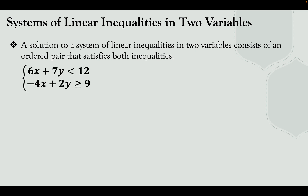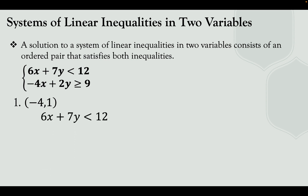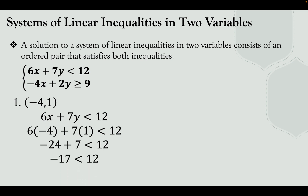Consider the system: 6x plus 7y less than 12, and negative 4x plus 2y greater than or equal to 9. Let's try the ordered pair negative 4 and 1. Substituting into the first inequality: 6 times negative 4 plus 7 times 1 less than 12 gives negative 24 plus 7, which is negative 17 less than 12. Is negative 17 less than 12? Yes, that is true.